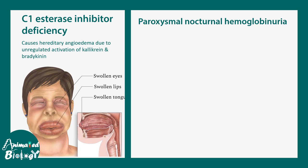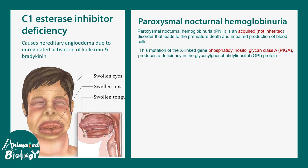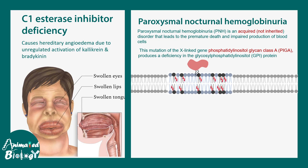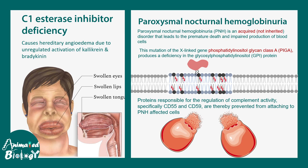There is another deficiency known as paroxysmal nocturnal hemoglobinuria. In this deficiency, an X-linked gene known as phosphatidylinositol glycan class A, or PIGA, gets mutated. It normally produces a GPI-anchor protein, and when this GPI-anchor protein is not produced, it leads to problems. Proteins responsible for regulation of complement activity, such as CD55 and CD59, are thereby prevented from attaching to the cell surface. This means the overall complement system is hyperactive and dysregulated, leading to fixation of complement on RBC surfaces and lysis of these cells, resulting in hemolytic anemia.